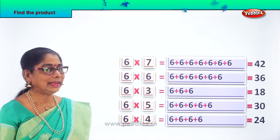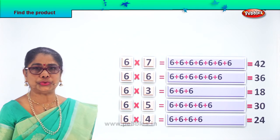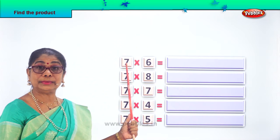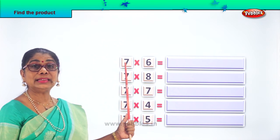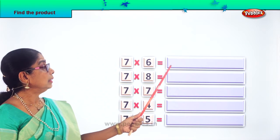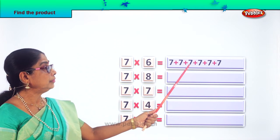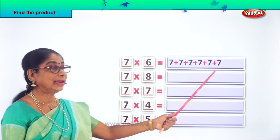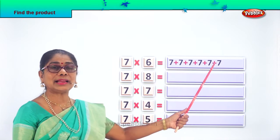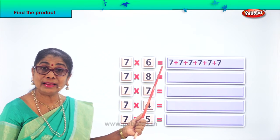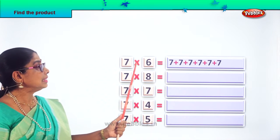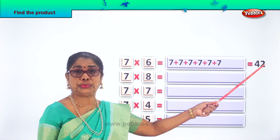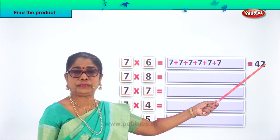Let's look at another exercise. Find the product of 7 sixes. 7 six times — so we write 7 six times: 1, 2, 3, 4, 5, 6. Repeat the addition — 7 written down 6 times. What are 7 sixes? 7 sixes give you the answer. 7 sixes are 42.